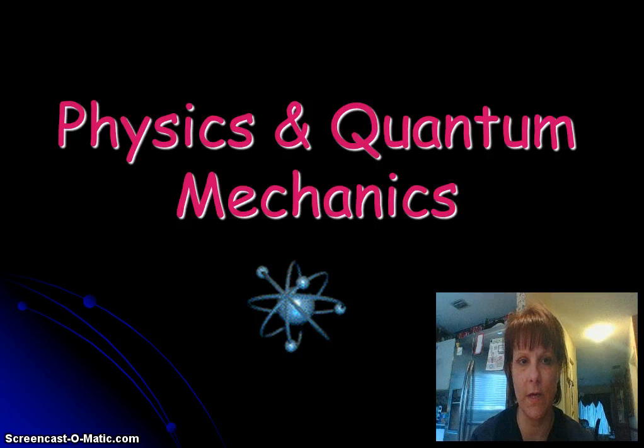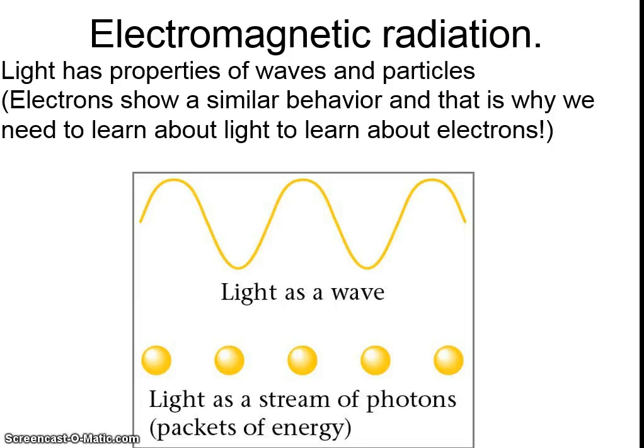Alright guys, so this is going to be particularly for the people who were away on Antioch because I know that you missed this lecture and we have a quiz this week. So I'm going to give you a walkthrough of what we covered and how to do the math. So the focus of this chapter is electrons, and the thing is that electrons behave very similarly to how light behaves because light has properties of both waves and particles and electrons also follow these laws of quantum mechanics. So we're going to do a little bit of an introduction about the behavior of light before we get into the behavior of electrons.